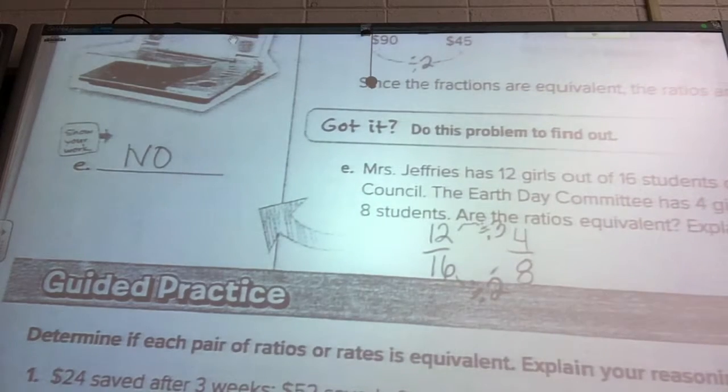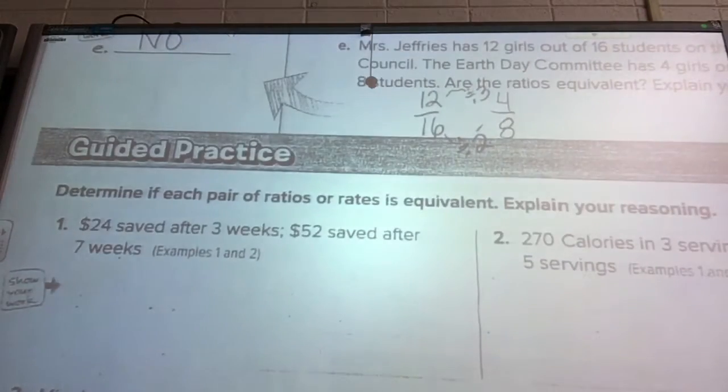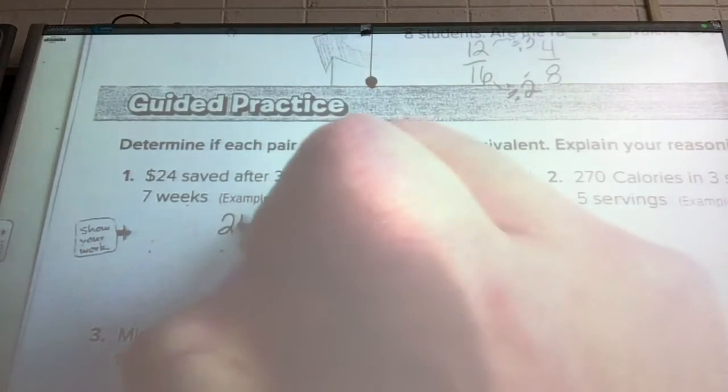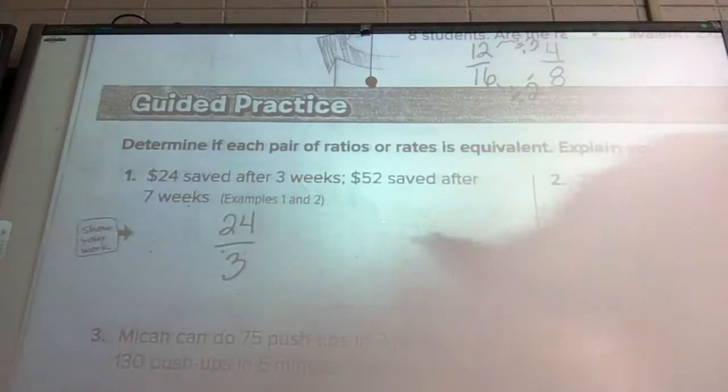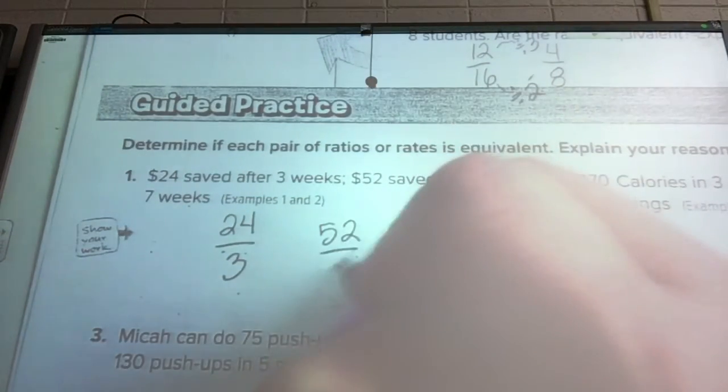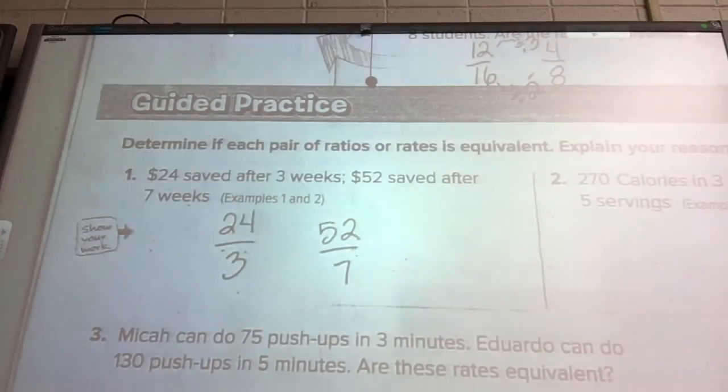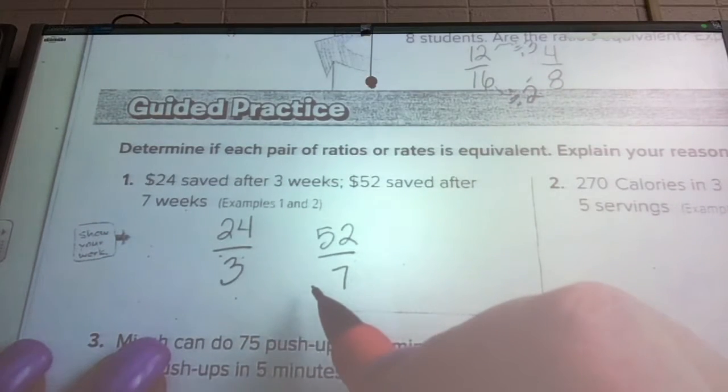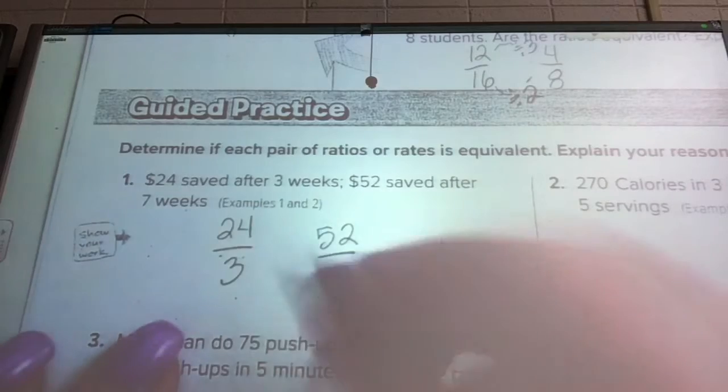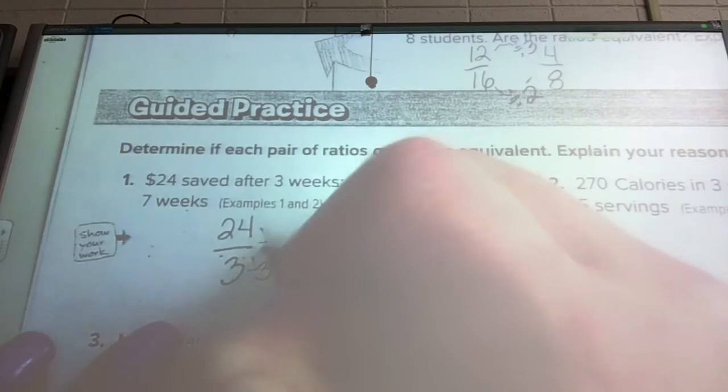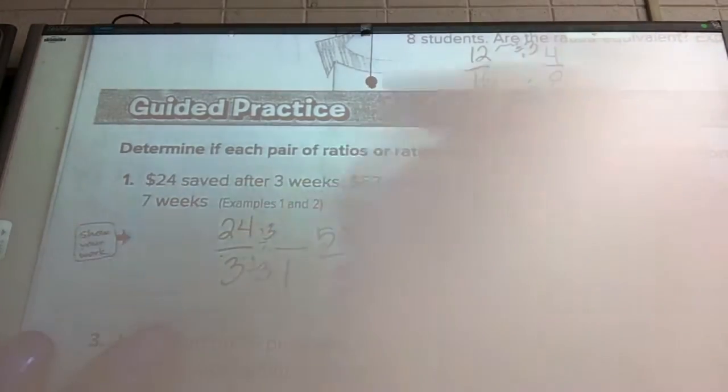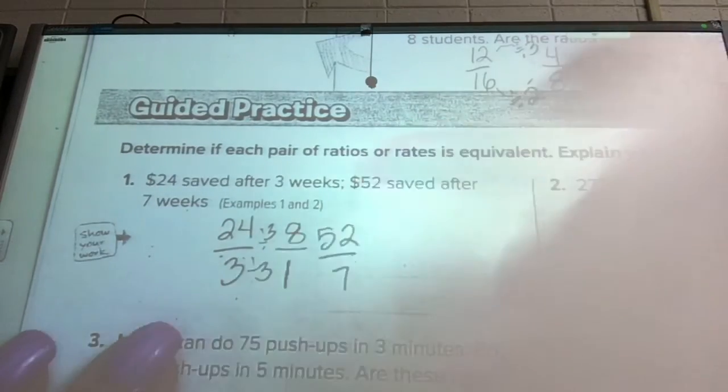Let's look at our guided practice. Number 1, $24 saved after 3 weeks, $52 after 7 weeks. Are they equivalent? The easiest way for this one, because we can't do anything to get from 3 to 7, let's see if we can take these down to unit rates. If we divide by 3 on the top and the bottom, we would get 1. 3 divided by 3 is 1. And 24 divided by 3 is 8.